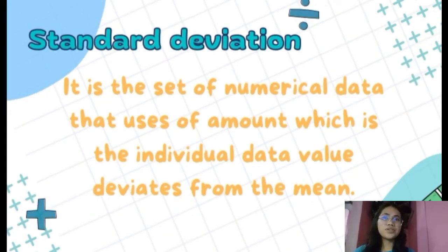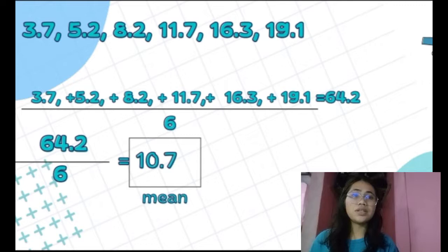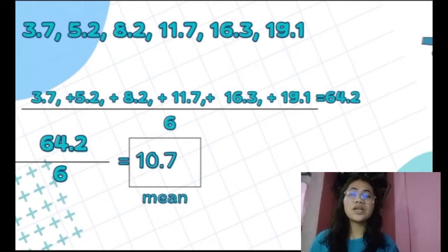For standard deviation, it measures the amount which each individual data value divides from the mean. First, we have to get the mean. We have to add all of the given numbers: 3.7 plus 5.2 plus 8.2 plus 11.7 plus 16.3 plus 19.1, which equals 64.2, divided by 6. So 64.2 divided by 6 equals 10.7. Our mean is 10.7.